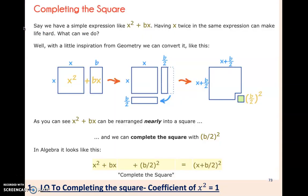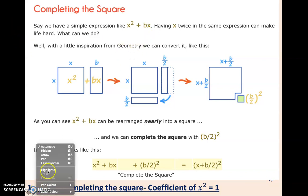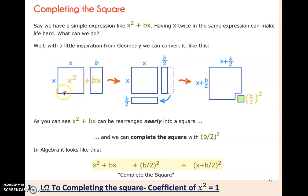Today we're going to be looking at completing the square. First I want to look at where this comes from. Let me get my trusty laser pointer. Say we have a simple expression like x squared plus bx. Having x twice in the same expression can make life a little bit tricky. So let's have a look at it from a geometrical perspective with pictures. If we've got x squared, that means that we've got x times by x. We can represent that as a square because our x's are the same.